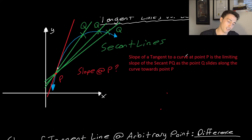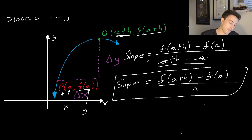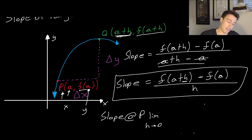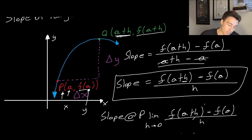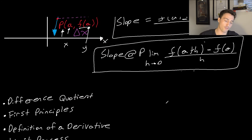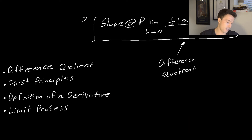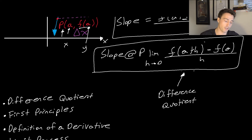To get the slope of the tangent line from the secant line slope, we apply our definition. The slope at point P is the limit as h → 0 of [f(a+h) − f(a)] / h, because h was the difference between P and Q. This resulting equation is known as the difference quotient. It's also called first principles of calculus, the definition of a derivative, and the limit process. When you see those terms, they all refer to finding the slope of the tangent line.